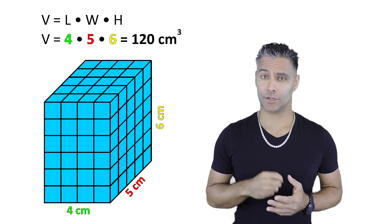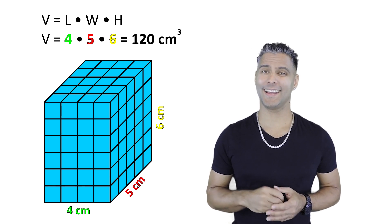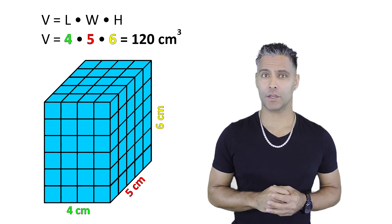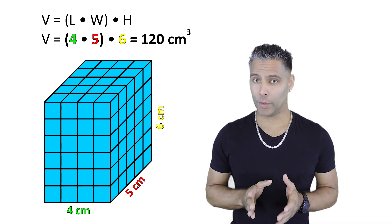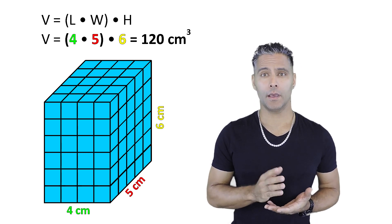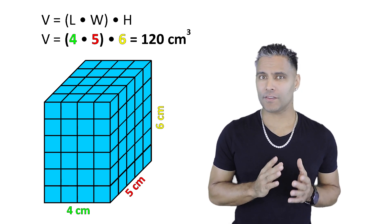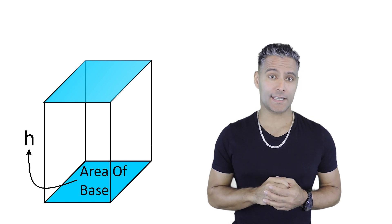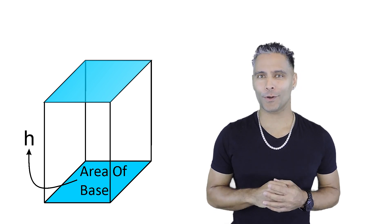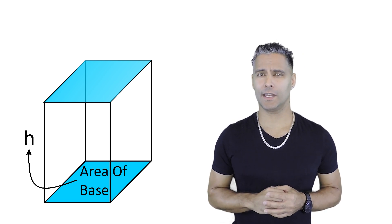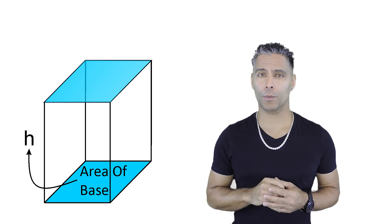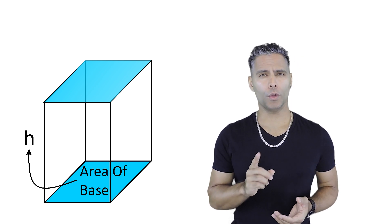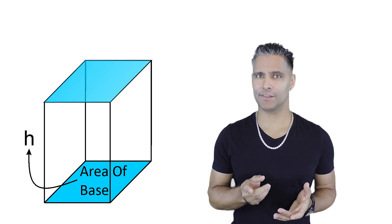The volume of a rectangular prism is found by multiplying its length times its width times its height. But consider the first part of that equation — length times width — which gave us the area of the rectangle's base before we gave it a third dimension. So we can summarize the formula as the area of the object's base multiplied by the object's height. This is important because it works for the volume of all prisms. Length times width times height is only specific to rectangular prisms and will not work for other prisms. However, finding the area of a prism's base and multiplying by its height will work for any kind of prism, and also cylinders, which technically are not prisms.